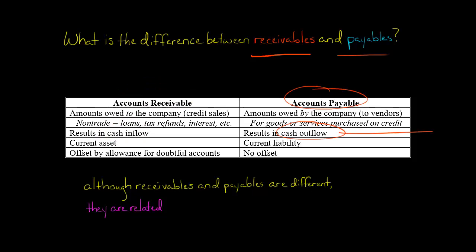For that reason, accounts receivable is recognized generally as a current asset. I've seen some cases where companies were expecting some receivables to be realized several years into the future, and so they recognize those receivables as a non-current asset. But generally, accounts receivable is a current asset. Accounts payable, on the other hand, is going to be a current liability.